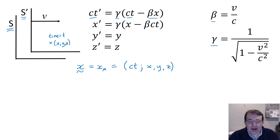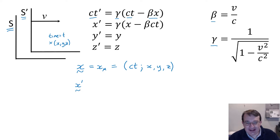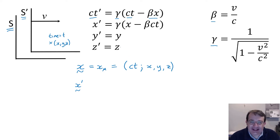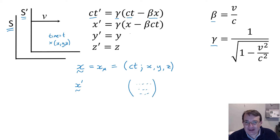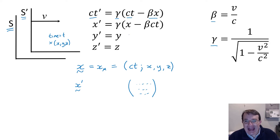Now if we look at this mapping between the four-vector in frame S-prime and our coordinates in frame S, we can see that we could write this as the four-vector multiplied by a four by four matrix.